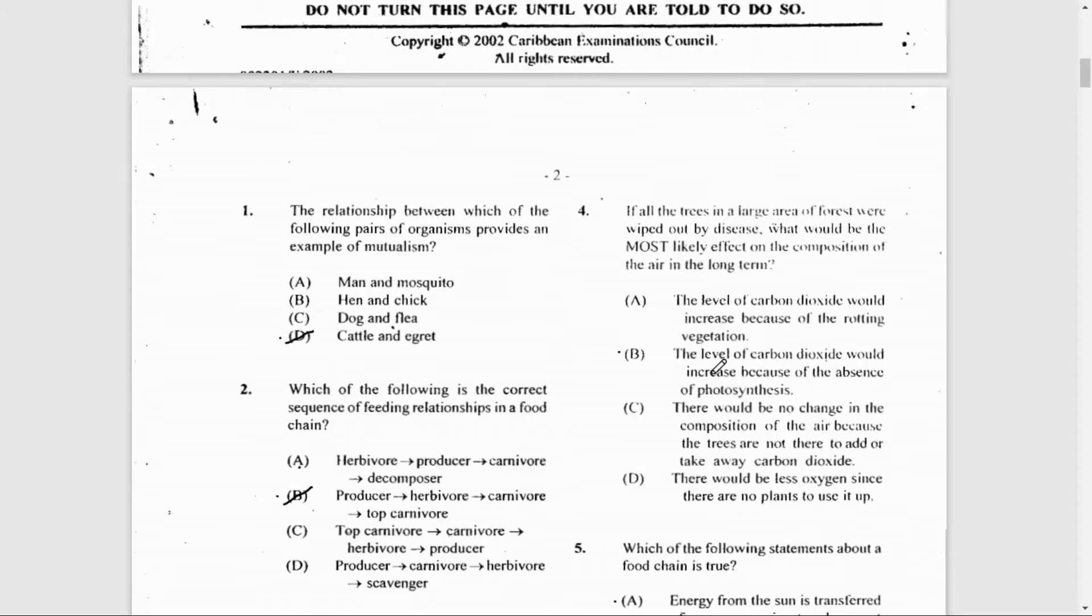Trees remove carbon dioxide from the air during photosynthesis in the day. So if all the trees are wiped out, the level of carbon dioxide in the atmosphere would increase. That's the whole principle behind global warming, because carbon dioxide is a greenhouse gas that traps heat around the earth's surface, causing the atmosphere to become warmer. The answer is B.